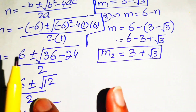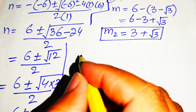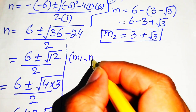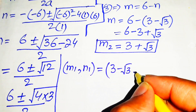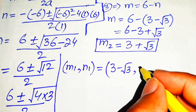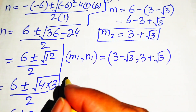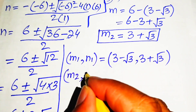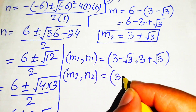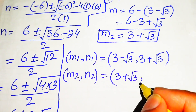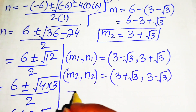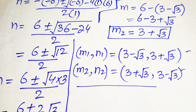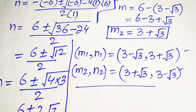We have two solutions. The first solution is m1 equals 3 minus square root of 3 and n1 equals 3 plus square root of 3. The second solution is m2 equals 3 plus square root of 3 and n2 equals 3 minus square root of 3. These are the two solutions and the final answer. Thank you for watching — please subscribe to the channel for more videos.